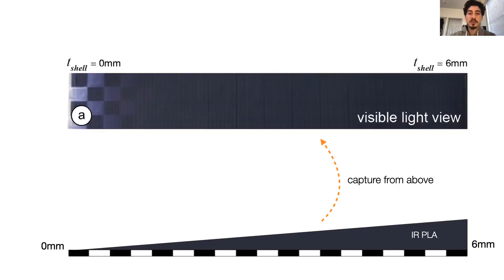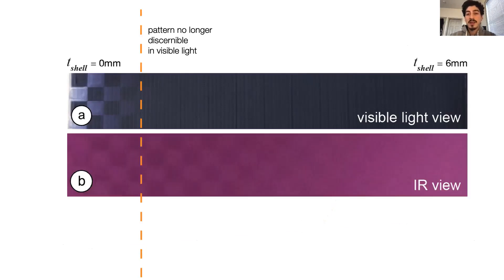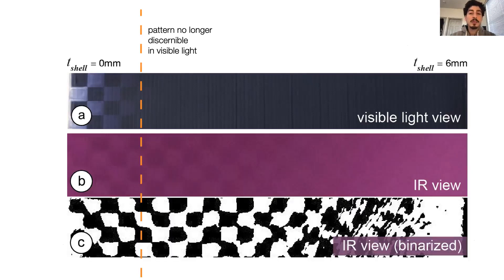This is how it looks to us humans. Now, as you see, at a certain point, the pattern is no longer discernible, right? Well, the interesting thing is when you image it with an IR camera, this is what you get. And when you run our image processing pipeline on the IR image, you're able to reconstruct the checkerboard pattern like this.